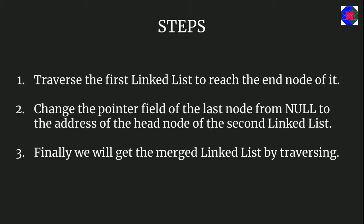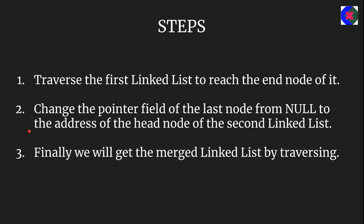Now let us have a look at the steps. First, we have to choose one as the first linked list and another as the second linked list. We have to traverse the first linked list to reach the end node. After we reach the end node, we have to change the pointer field of that node — we make the end node of the first linked list point to the head node of the second linked list. Some link changing will be done there and finally we will get the merged linked list.